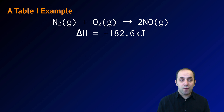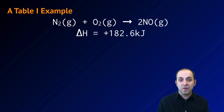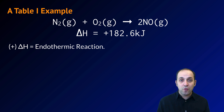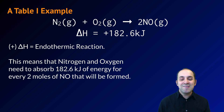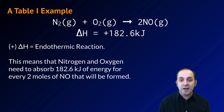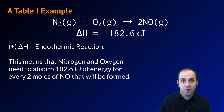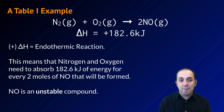Here's a real-life example from Reference Table I. For the reaction N₂ + O₂ → 2NO, the delta H value is positive 182.6 kJ. Delta H is positive, confirming it's endothermic. For every two moles of NO produced, we need to put in 182.6 kJ of energy. If we wanted to make one mole of NO, we'd divide 182.6 by 2. NO is an unstable compound compared to nitrogen and oxygen as a result.